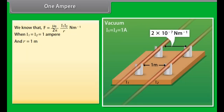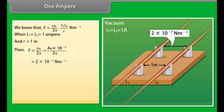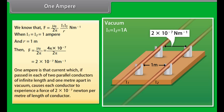We know that F = (mu naught / 2 pi) × (I1 I2 / R). When I1 = I2 = 1 Ampere and R = 1 meter, then F = 2 × 10⁻⁷ Newton per meter. Therefore, 1 Ampere is that current which, when passed through two parallel conductors of infinite length and 1 meter apart in vacuum, causes each conductor to experience a force of 2 × 10⁻⁷ Newton per meter of length.